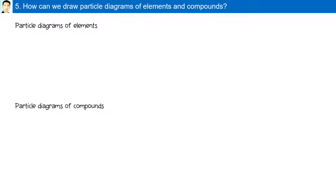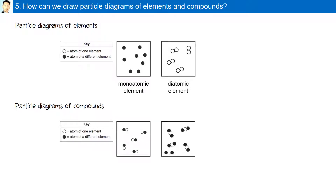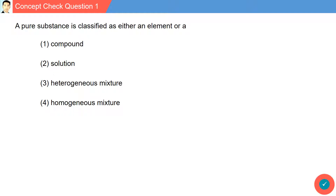How can we draw particle diagrams of elements and compounds? Particle diagrams of elements can be drawn showing monatomic elements or diatomic elements. Particle diagrams of compounds can be shown by combining different atoms together in different combinations. For example, in compound A there is one clear element and atoms of a dark element combined together, while in compound B there are two dark element atoms and one clear atom.